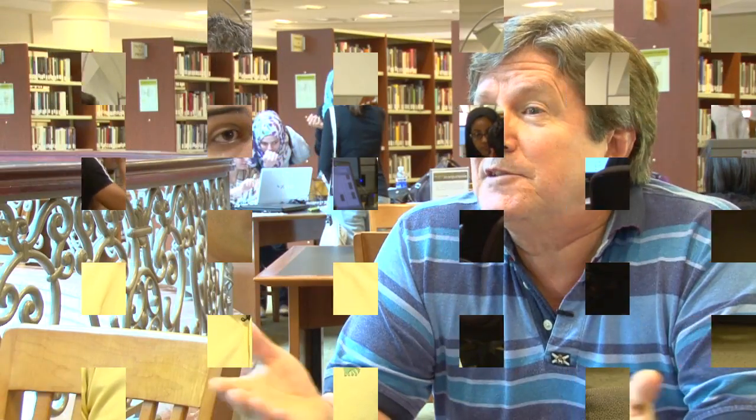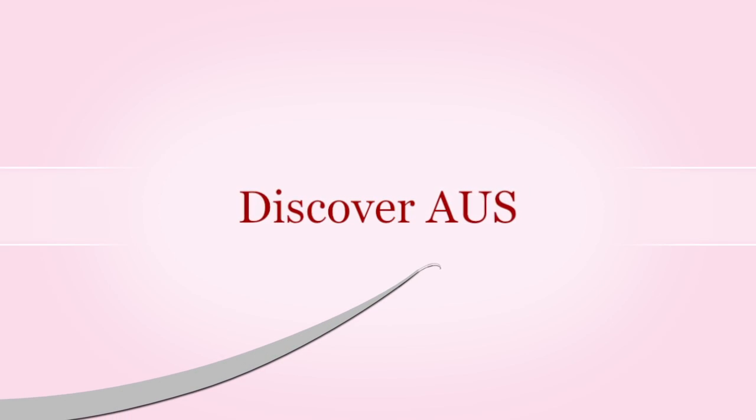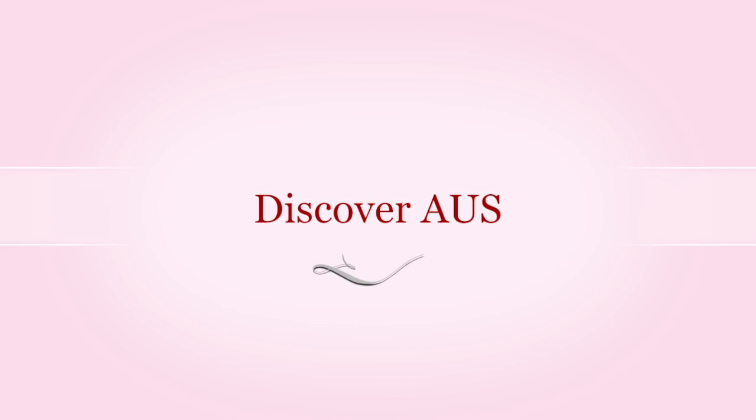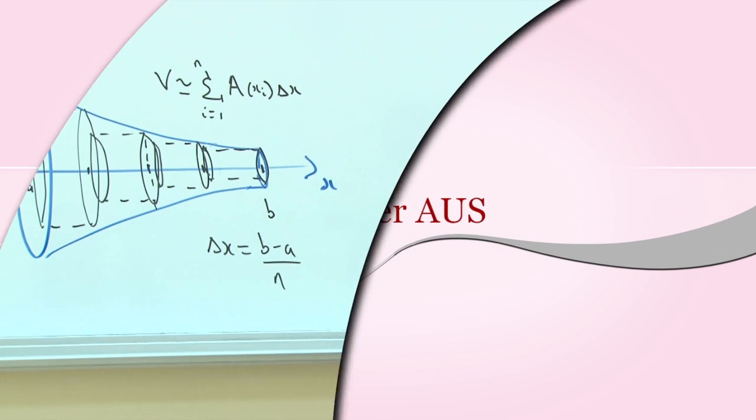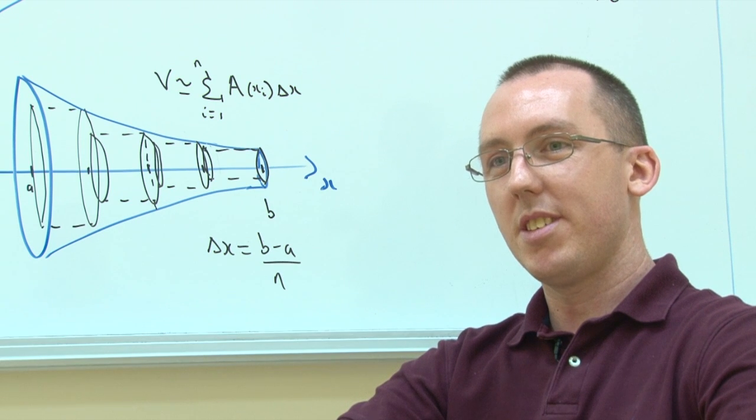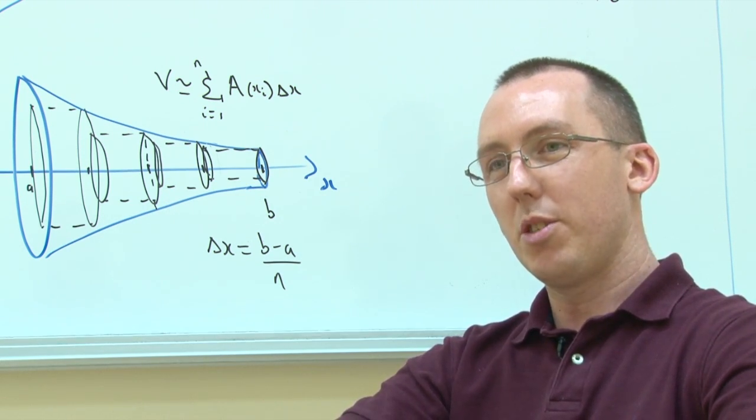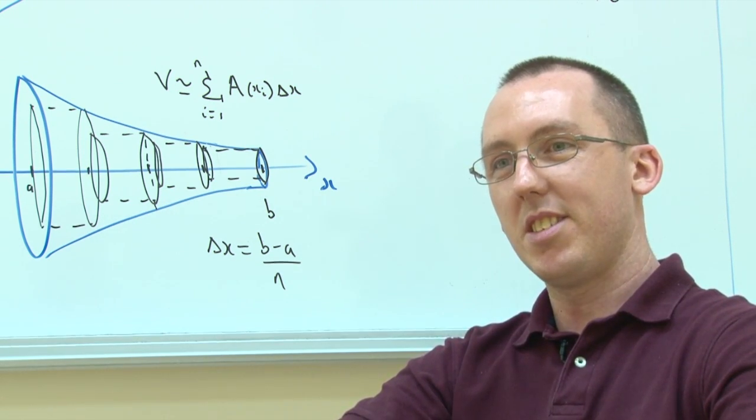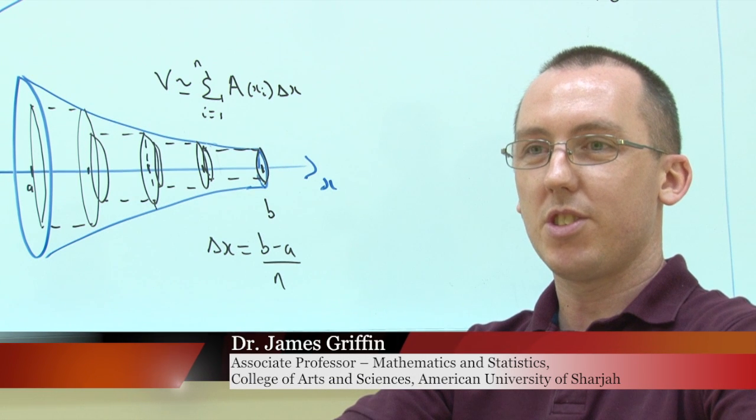Hi, my name is James Griffin, and I'm from England. I'm an associate professor in the department of Mathematics and Statistics at the American University of Sharjah.